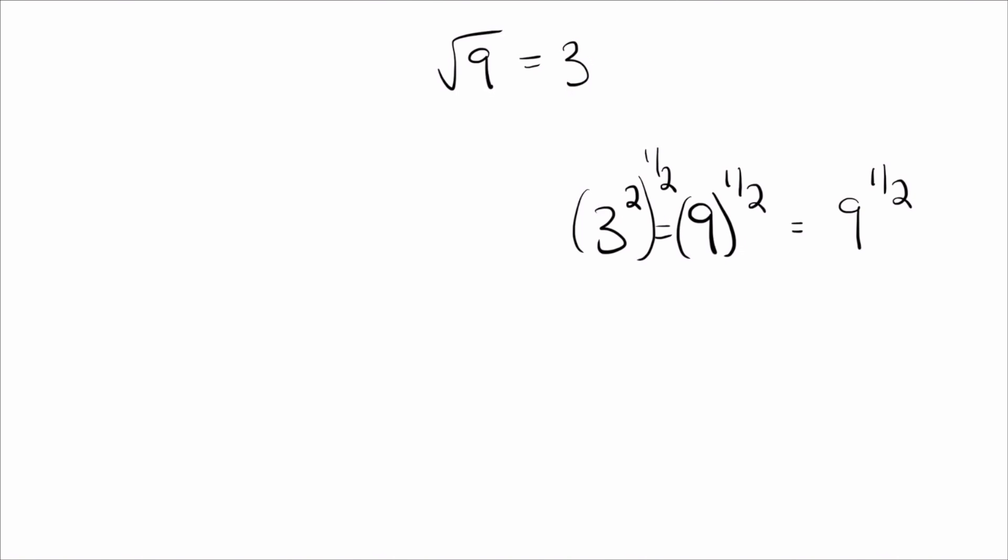On the left, if you've seen my video about variables with exponents, you know that having a power to another power means that you multiply them. So this is three to the two times one-half. And of course, two times one-half is one, and three to the one is three.